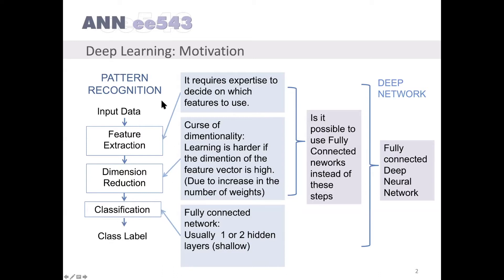Feature extraction requires expertise to decide on which features to use. For dimension reduction, there is a problem called curse of dimensionality. Learning is harder if the dimension of the feature vector is high. This is due to increasing the number of parameters. If the number of parameters is too large, the neural network used for classification memorizes the given dataset instead of developing a generalization ability.